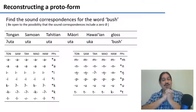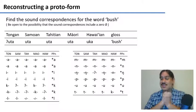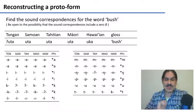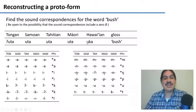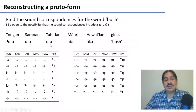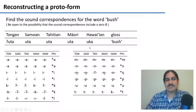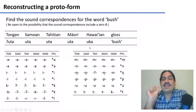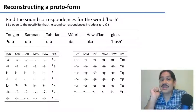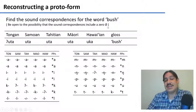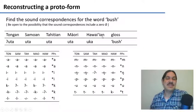We have quite a bit of knowledge under our belt now. These are the correspondences that we have so far. We have the cognate set for 'bush,' like in the mountains. Try to find the sound correspondences for bush — don't reconstruct it yet. Just try to find the correspondences and be open to the possibility of there being things that are zero. Please pause the video.